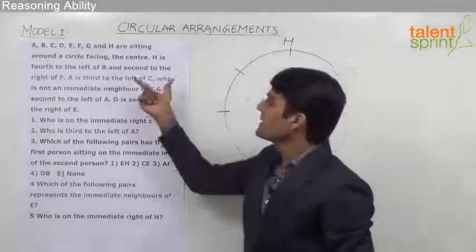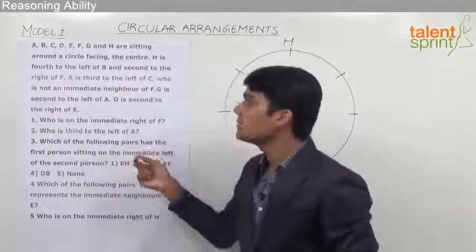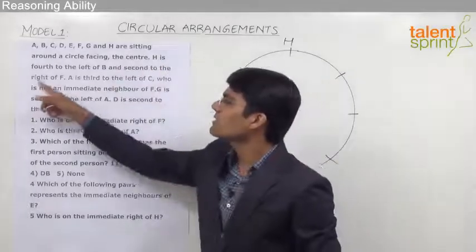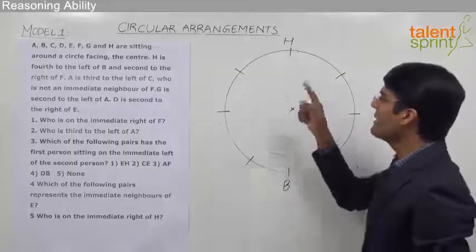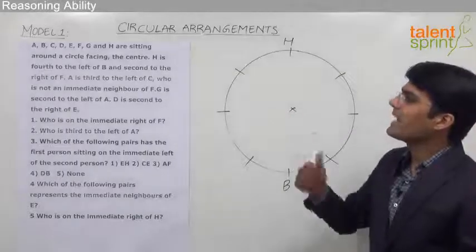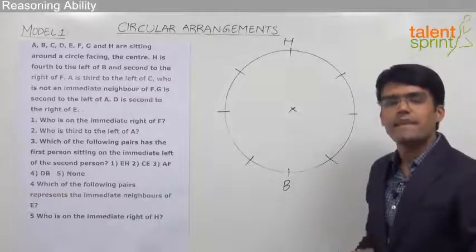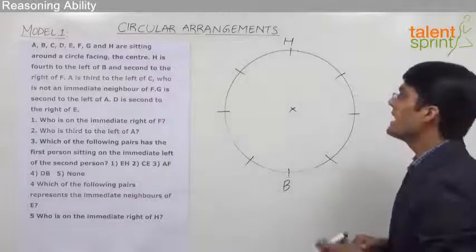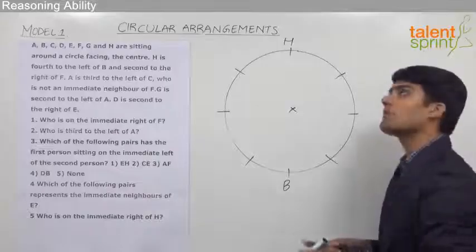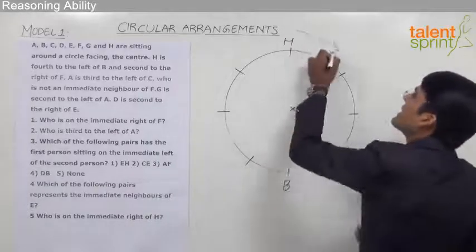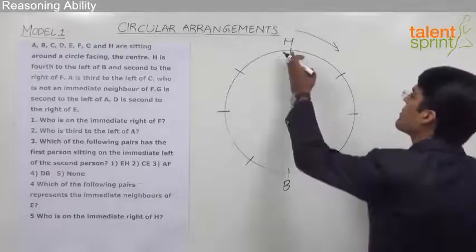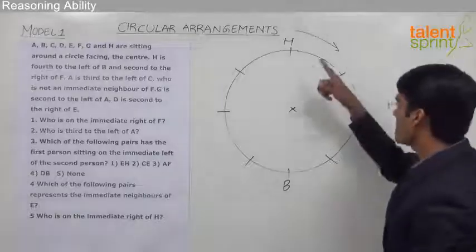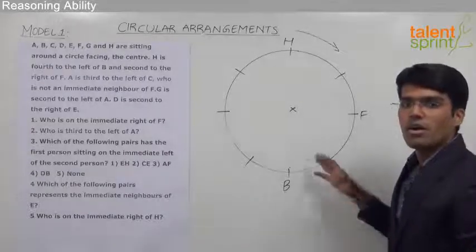The other part of the statement is 'second to the right of F.' Since 'and' is used, we refer to the first person, so H is second to the right of F. This means F is second to the left of H. Left of H is in the clockwise direction as they are facing center. So second to the left of H — 1 and 2 — this place should be occupied by F. So now we have marked three persons: H, B, and F on the circular table.